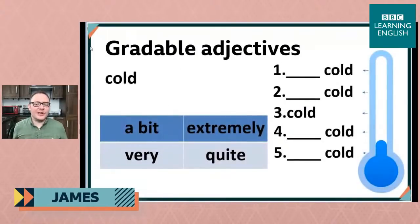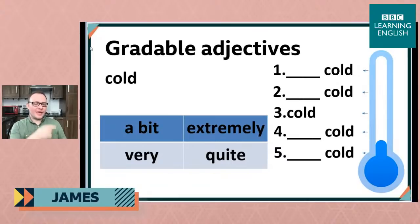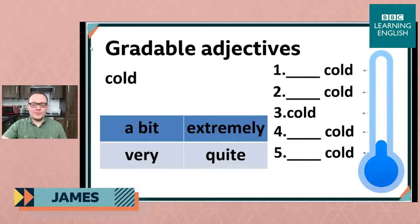Have a look at this picture. On the right-hand side of your screen, you can see a thermometer, and next to it we have options 1, 2, 3, 4, and 5. Number 3 is completed for you — it's right in the middle: it's cold. But then we have a box of other modifiers. I want to know where we put 'a bit,' 'extremely,' 'very,' and 'quite' on the thermometer. See if you can match 1, 2, 4, and 5 with the different options.